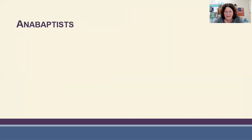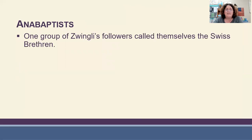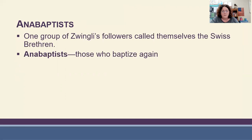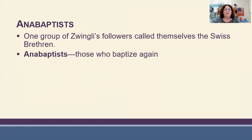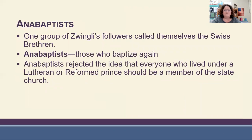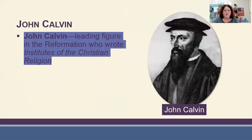The Anabaptists were called so because they baptized again. This was a group of Zwingli's followers who called themselves the Swiss Brethren but became known as Anabaptists because they began to baptize people again, teaching that infant baptism was not sufficient — you had to be baptized again as a believer. They rejected the idea that everyone living under a Lutheran or reformed prince could be a member of the state church.